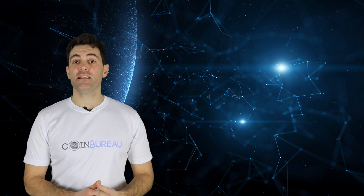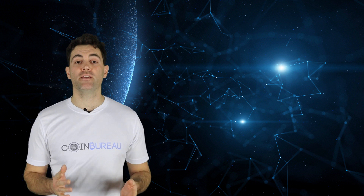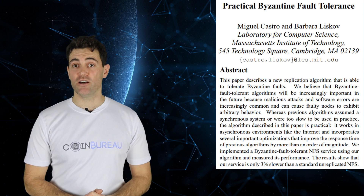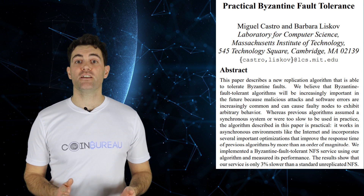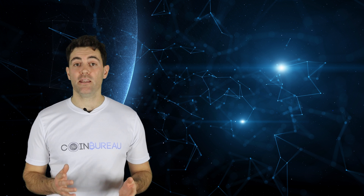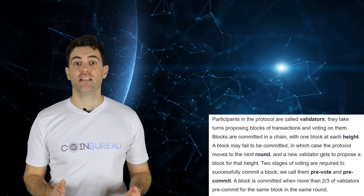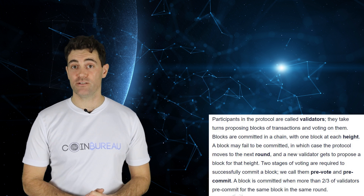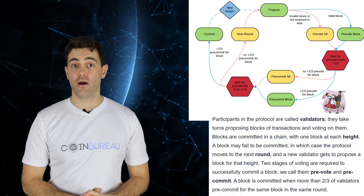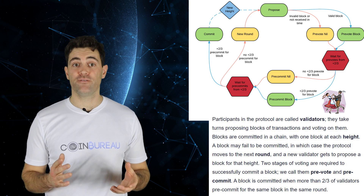Tendermint is the first proof-of-stake consensus mechanism making use of the principles of Practical Byzantine Fault Tolerance, or PBFT, an algorithm initially proposed by researchers Liskov and Castro in 1999 after over 30 years of research. Tendermint BFT includes many optimizations beyond the original PBFT mechanism. It assigns the rights to generate new blocks in a random fashion using validators in a multi-round voting process. Committing blocks requires a supermajority — two-thirds of the quorum — so it may take a few rounds to finalize blocks on the network.